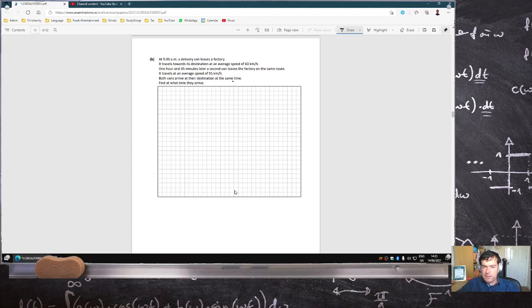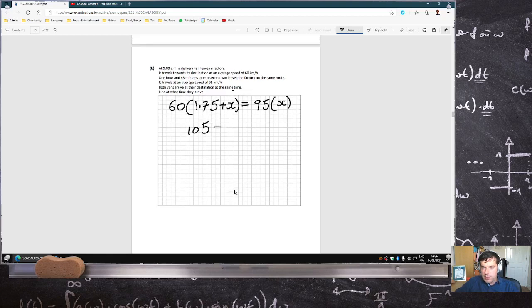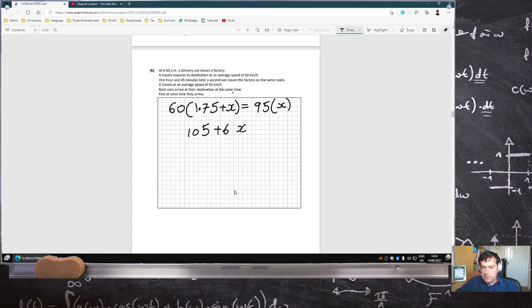So the first van travels at a speed of 60 for at least one hour and 45 minutes, plus some extra time. The second van goes 95, but only for that extra time. And these are equal because they travel the same distance. So 105 plus 60x equals 95x.